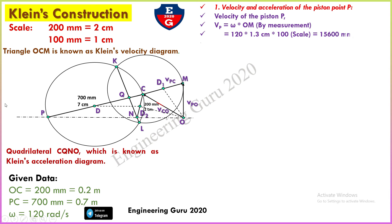First, velocity and acceleration of piston P. The velocity of piston P equals omega multiplied by OM, since V equals R·omega where R is OM. Omega is already given as 120 radian per second. Measuring OM from the diagram gives 1.3 centimeters. Multiplying by the scale factor of 100 mm gives 130 mm. Therefore velocity of piston VP equals 120 multiplied by 0.130 meter, giving VP equal to 15.6 meter per second.